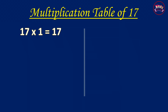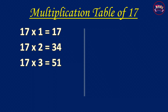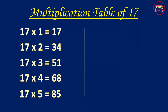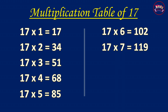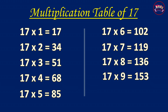Multiplication Table of 17. 17-1 is 17, 17-2 is 34, 17-3 is 51, 17-4 is 68, 17-5 is 85, 17-6 is 102, 17-7 is 119, 17-8 is 136, 17-9 is 153, 17-10 is 170.